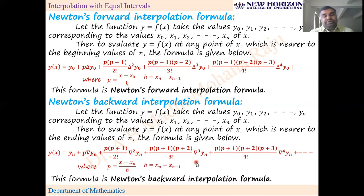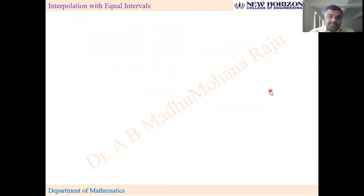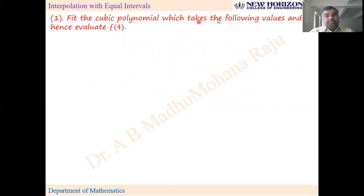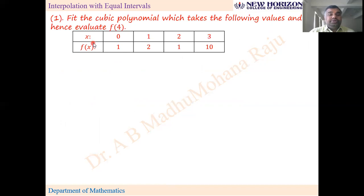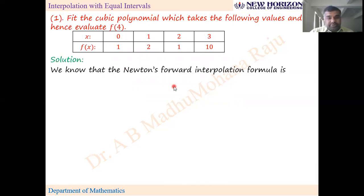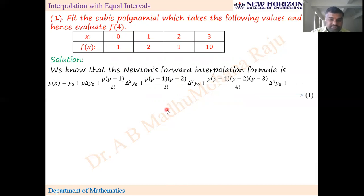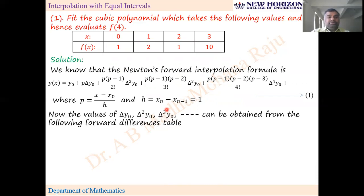Problem: fit the cubic polynomial which takes the following values and hence evaluate f(4). Even though f(4) is nearer to the ending values, since it is asked to fit the polynomial first, we follow the forward formula. The Newton's forward interpolation formula is used. We list out p and h, and then we need Δy₀, Δ²y₀, Δ³y₀, and so on, which we will find from the forward difference table.